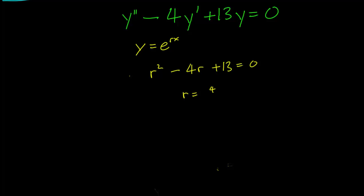We have r equals 4 plus minus square root of 16 minus 52 over 2 which is just going to be equal to 2 plus or minus 3i where i is the square root of negative 1.